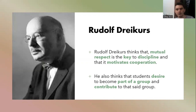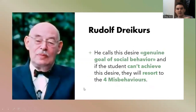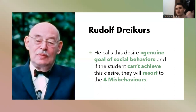In addition to that, he also thinks that students have a desire to become part of a group — they want to contribute to that group and they want to belong somewhere. He calls this belonging desire the 'genuine goal of social behaviour.' If a student just isn't able to get into a group and can't feel they belong to the classroom or any group, they will resort to the four misbehaviours we are going to talk about.